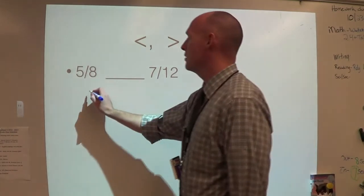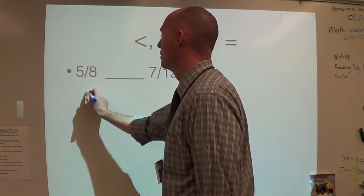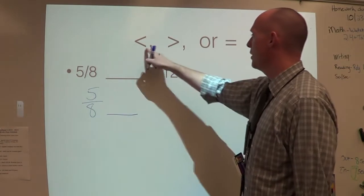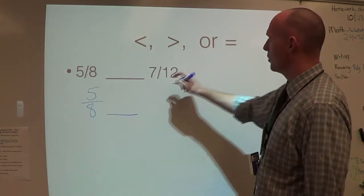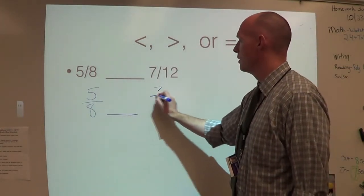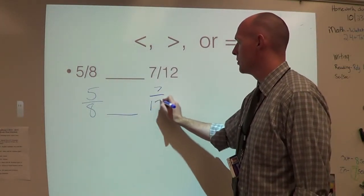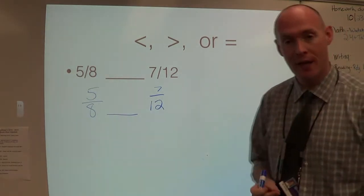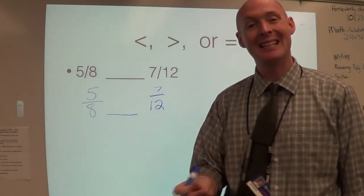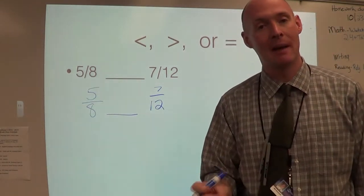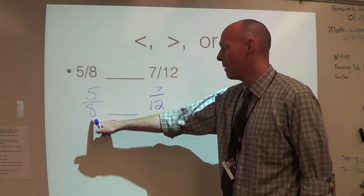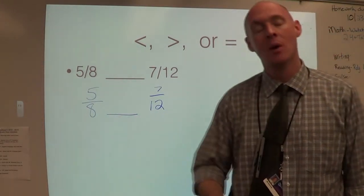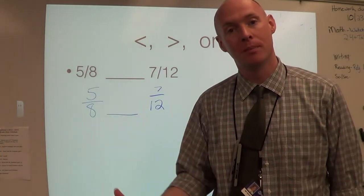So here I have five-eighths and we're going to use greater than, less than, or equal to seven-twelfths. Now, if you remember our first step, what we had to do was find the least common denominator. So I look at my two denominators, eight and twelve, and I see what is the least common multiple.